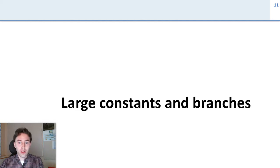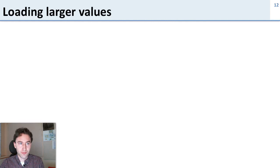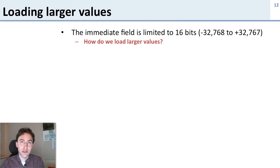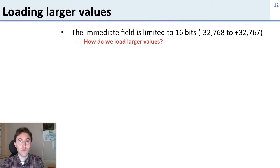Now let's talk about large constants and how constants work in branches. How do we load larger values? We've seen that the immediate field is limited to 16 bits, or from minus 32,000 to plus 32,000. But we need to be able to load larger values — we need to be able to load full 32-bit values for our 32-bit machine.